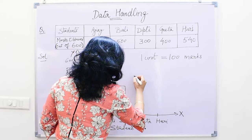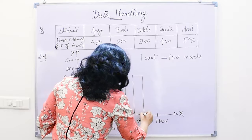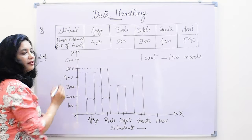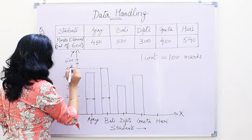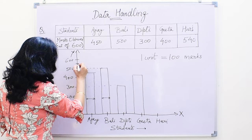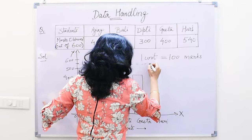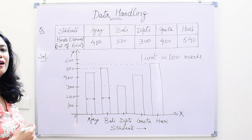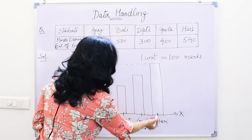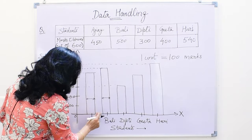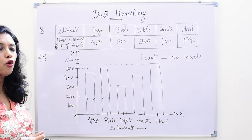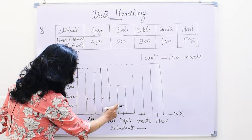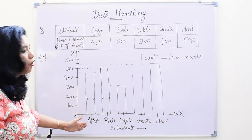Geeta has got 400. And Hari has got 540 — between 500 and 600, the center would be around 550, and 540 will be a little below it, somewhere here. You have to make straight lines; these are just rough representations. So this is Hari's marks which are 540. You have to remember that the space between the bars has to be the same — the spacing between all the bars of the students has to be equal.